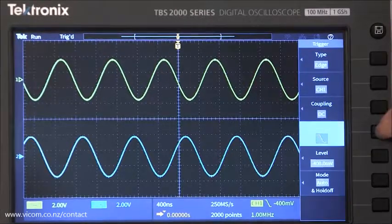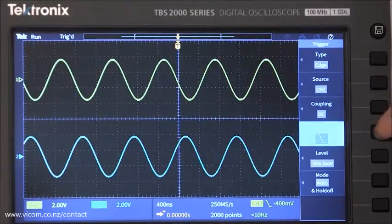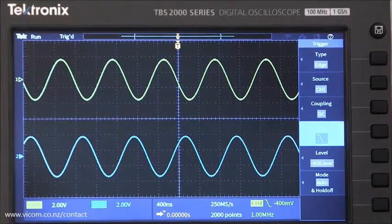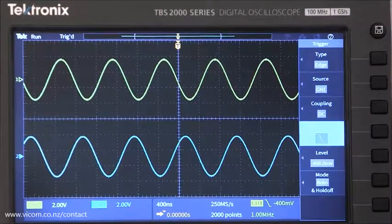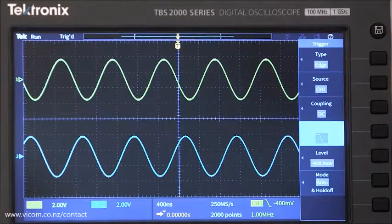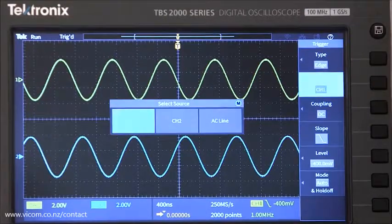You can change the slope setting from rising to falling. See how the trigger point moves from the rising to the falling signal? This is a two channel scope, and either channel can be used as a trigger source. Watch how the trigger changes from signal to signal when I change the source.